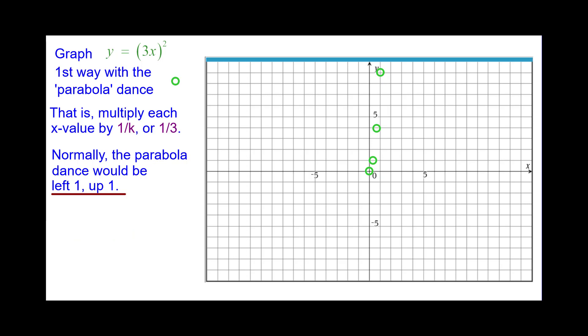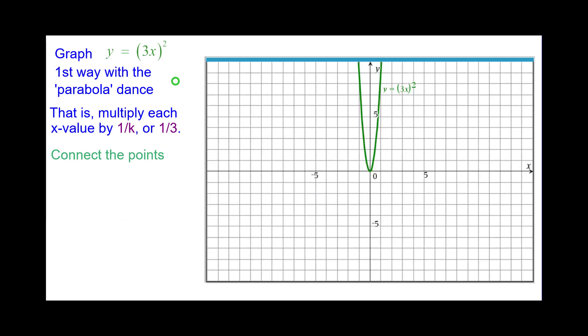Next point would be left 1 up 1. But this one's going to be left 1 third up 1. Left 2 up 4 becomes left 2 thirds up 4. And left 3 up 9 becomes left 1 up 9. Connect the points. This is our graph of y equals the quantity 3x squared.